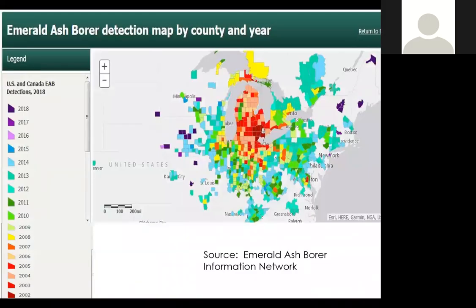This map is from the Emerald Ash Borer Information Network. They have a really great website with lots of useful information and this wonderful map that shows, by county throughout the northeastern United States and Canada, when emerald ash borer has been detected. It was first detected in Michigan, in the Detroit area and the Ontario region in 2002.